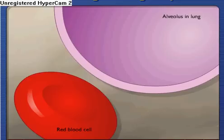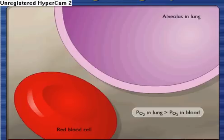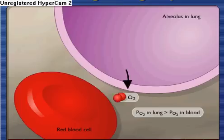Respiration serves as a means for the body to exchange gases with the atmosphere via the blood. The partial pressure of oxygen, PO2, in the air in the alveolar spaces in the lungs is greater than the PO2 in the blood, so oxygen diffuses into red blood cells from air in the lungs.